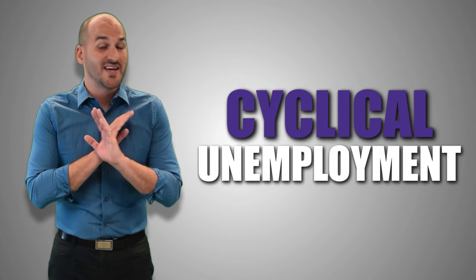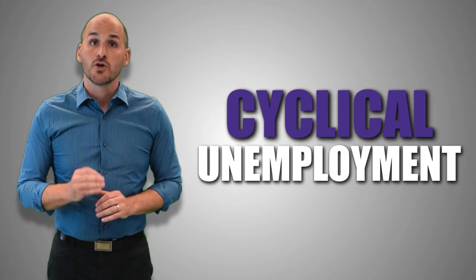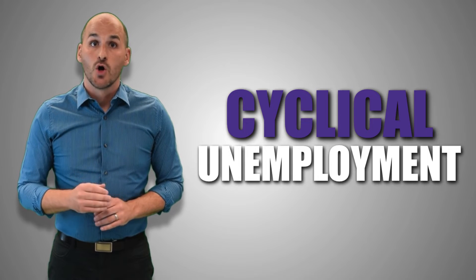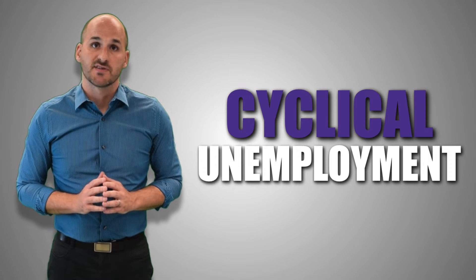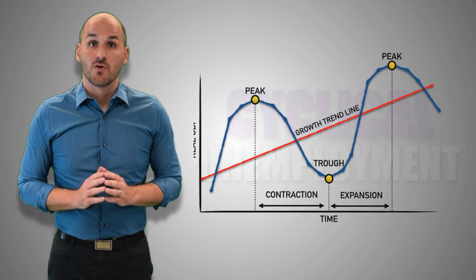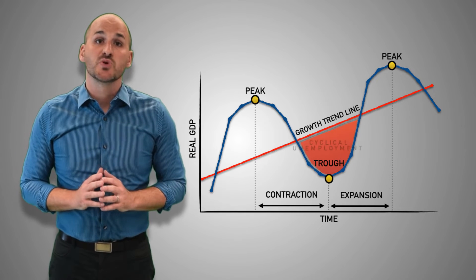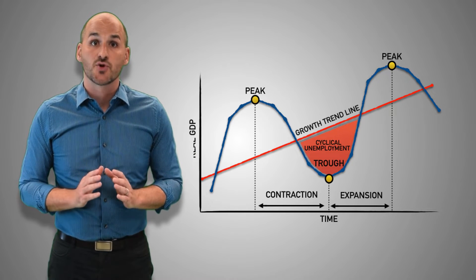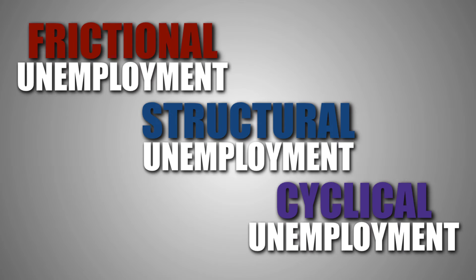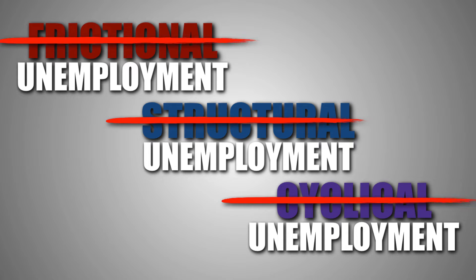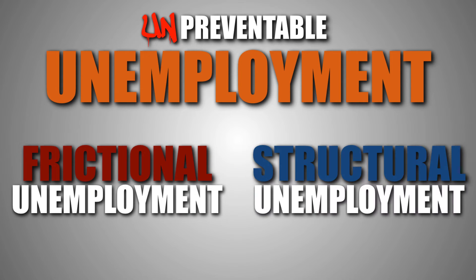Cyclical unemployment is also entirely preventable. Policies can be used to promote real GDP growth or correct economic contraction, which minimizes the severity of cyclical unemployment that an economy experiences. On the business cycle, cyclical unemployment is visible as the space between the trough and the growth trend line. Closing the trough eliminates cyclical unemployment. So what are we waiting for? Let's get to 0% unemployment by eliminating frictional, structural, and cyclical unemployment. Except, that's not possible. There are two types of unemployment that are unavoidable: frictional and structural unemployment.